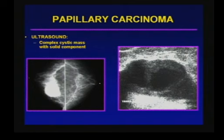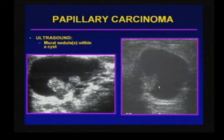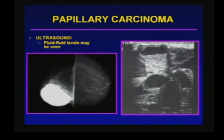When they present as masses we go on to perform ultrasound. They can be seen as complex cystic masses with a solid component. In this case the patient has a hyperdense mass in the retroareolar region — mostly a solid lobulated mass with some cystic elements. One can also see the typical large cyst with a mural nodule, and putting color on it shows the nodules are vascular. Less commonly one can see fluid-fluid levels, representing chronic hemorrhage — these lesions are very vascular and friable and bleed within themselves.